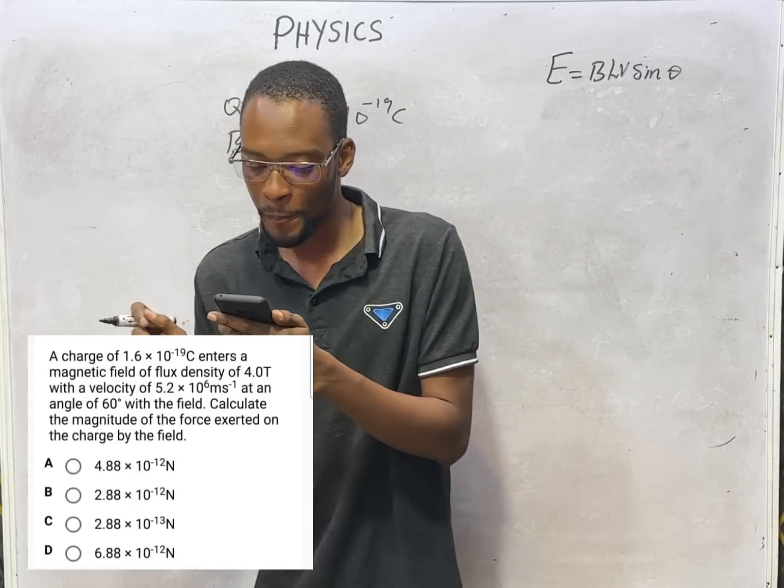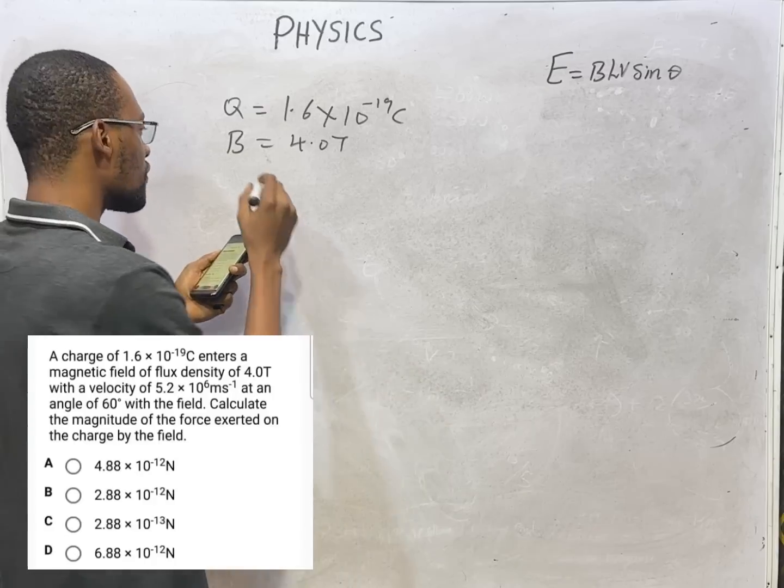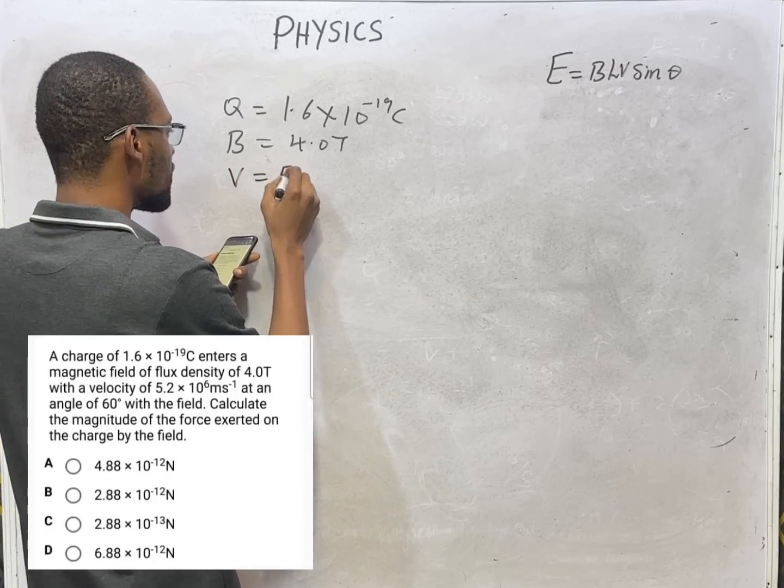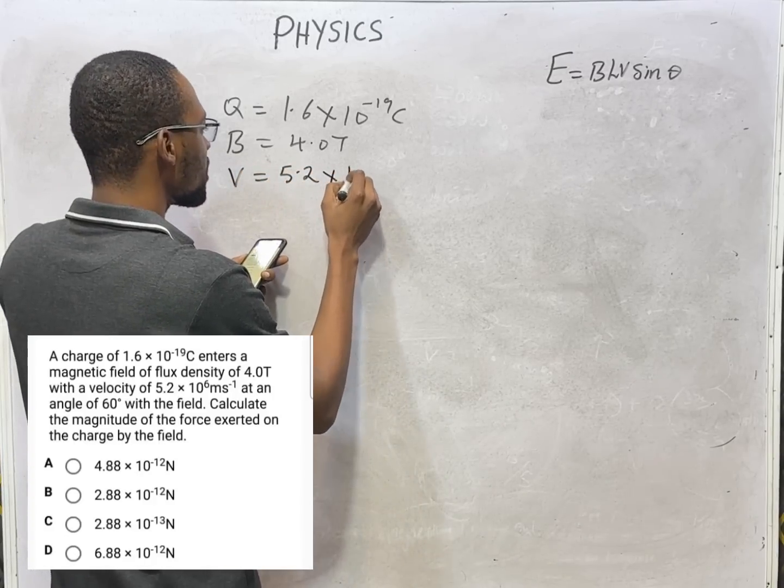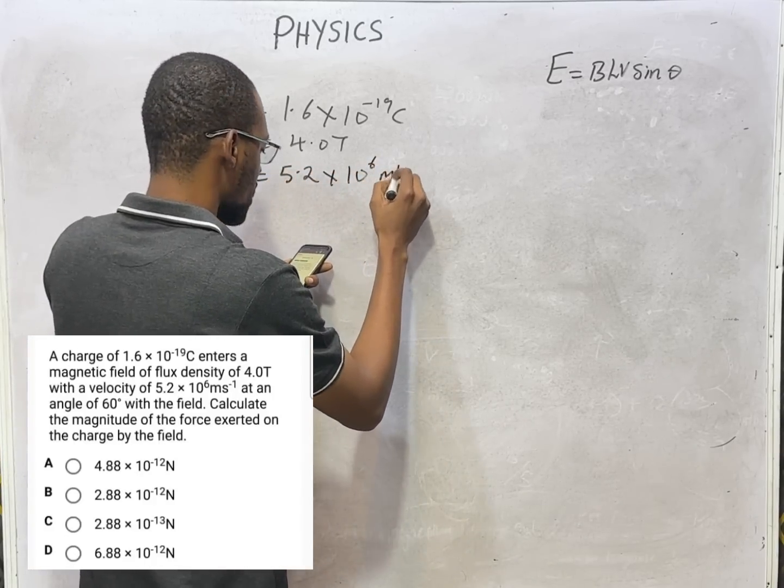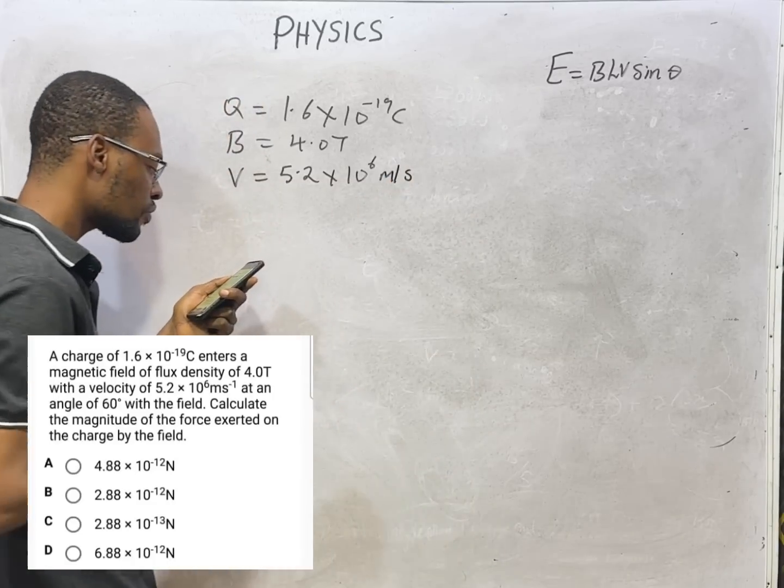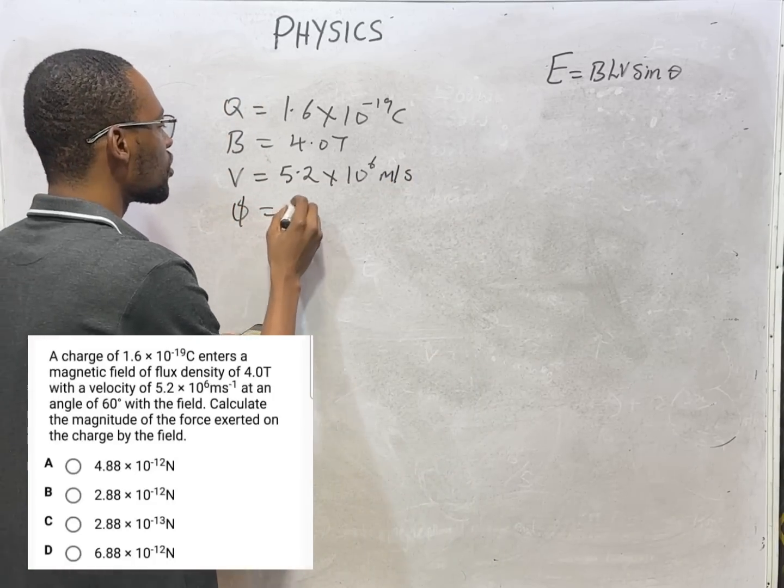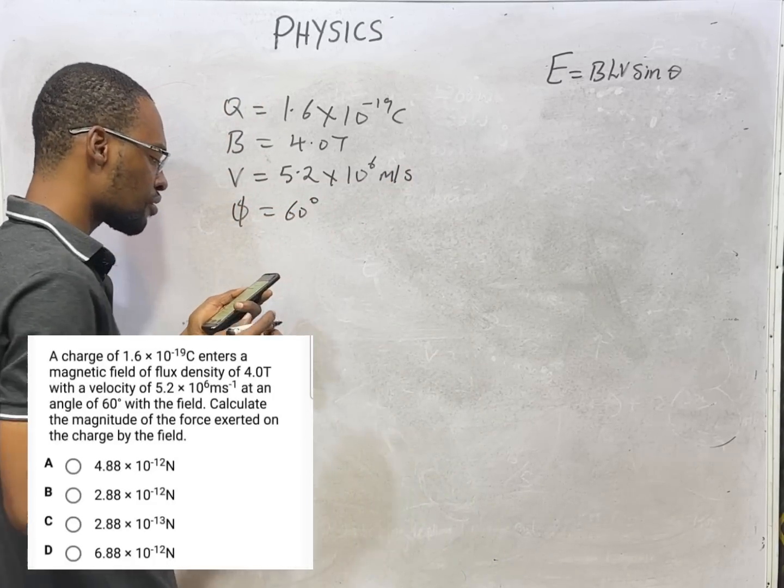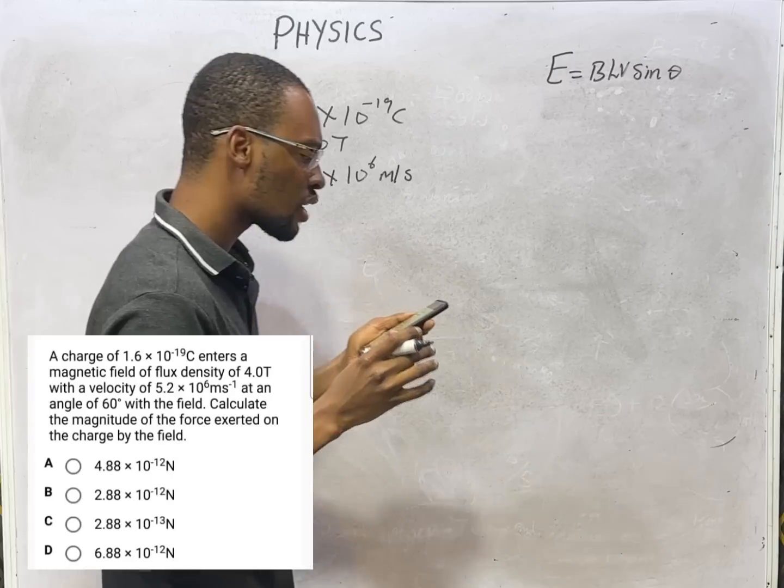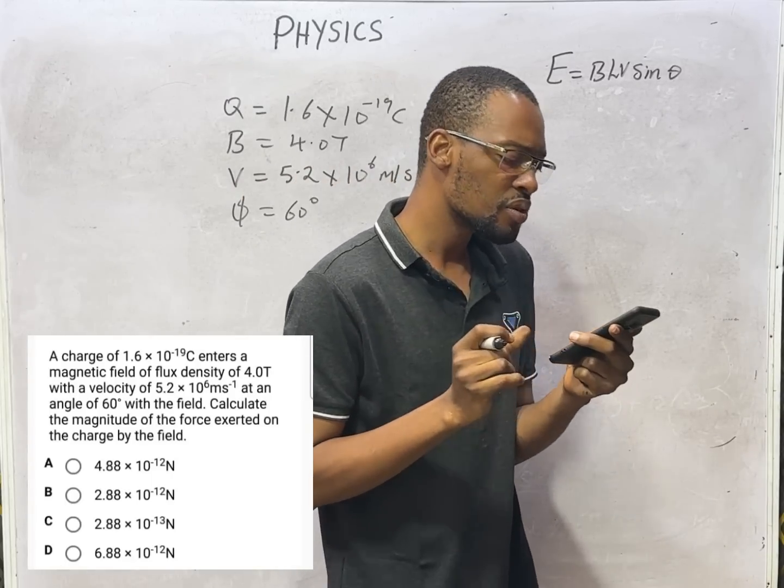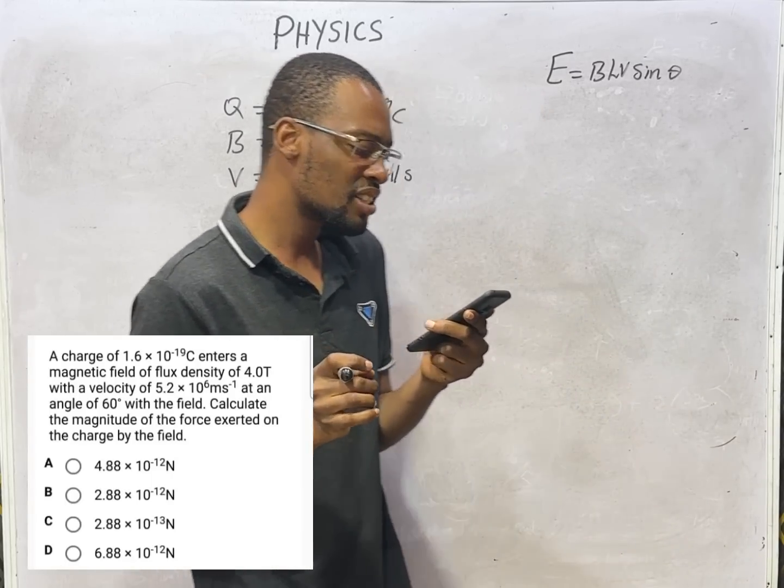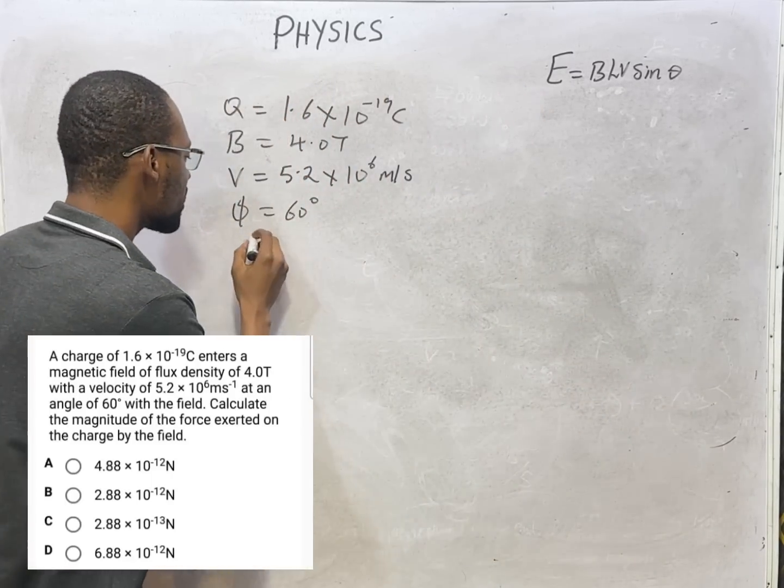This is with a velocity of 5.2 × 10^6 meters per second at an angle of 60 degrees. Calculate the magnitude of the force exerted on the charge.